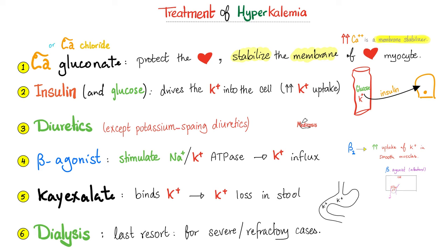Next, you can give the patient diuretics. All diuretics will waste potassium in the urine except potassium-sparing diuretics. So do not give spironolactone, eplerenone, triamterene, or amiloride. Other than those, you can give loop diuretics like furosemide, or thiazide diuretics like hydrochlorothiazide, etc.